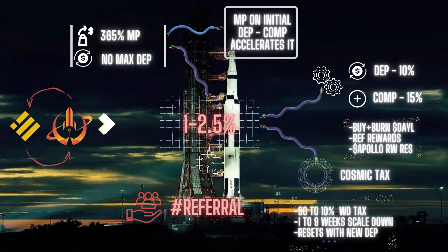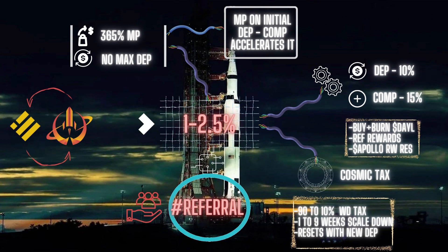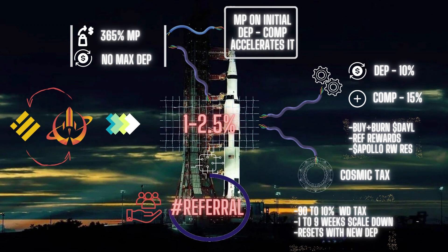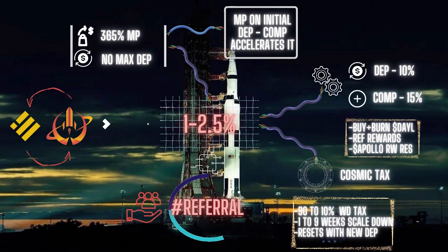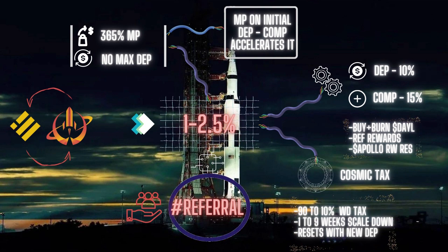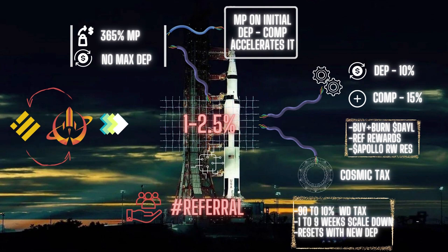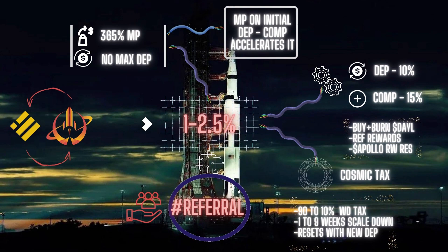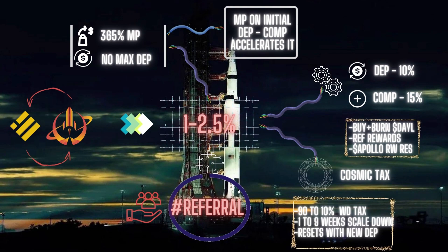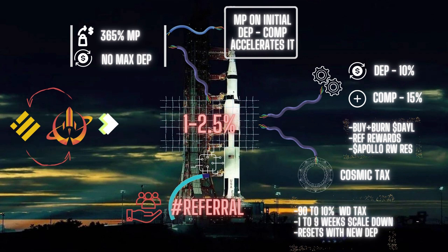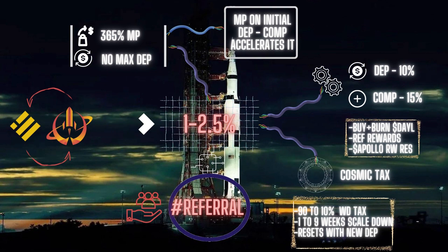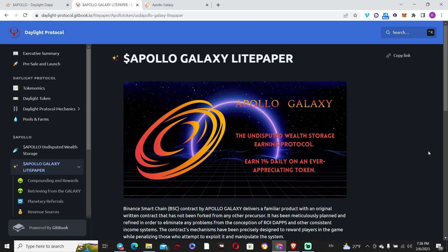There's also something called the Cosmic Tax, which is used to penalize early withdrawal. When you enter the platform, to reach a ten-percent withdrawal tax you have to wait nine weeks. If you withdraw in the first week you get charged ninety percent, so you have to wait nine weeks before your first withdrawal at ten percent. After that, whenever you withdraw you'll be charged ten percent. Importantly, withdrawing does not reset the timer — it only resets when you deposit again. More specific percentage details are available in the white paper.